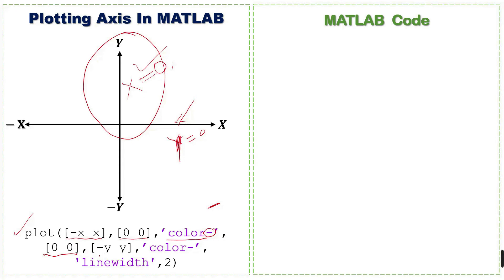Next we want to plot the y-axis. On the y-axis, x is equal to 0. We set the limit of the y-axis from minus y to positive y, then again specify the color of this line. The line is solid, and we also set the line width — the width of this line can be 2, 3, or up to you.